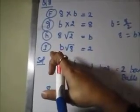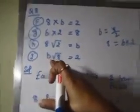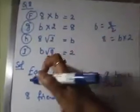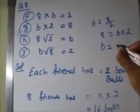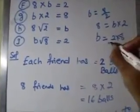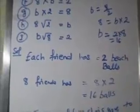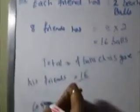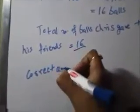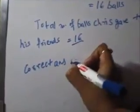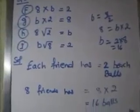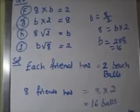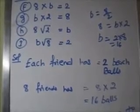Now the last option, I: B ÷ 8 = 2 means B = 2 × 8 = 16. So the correct answer is option I, where B ÷ 8 = 2.